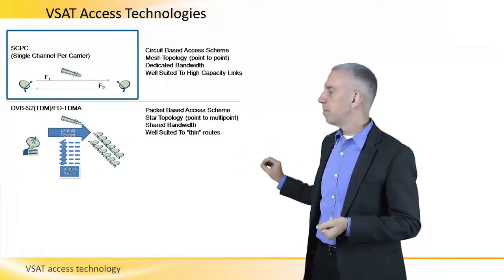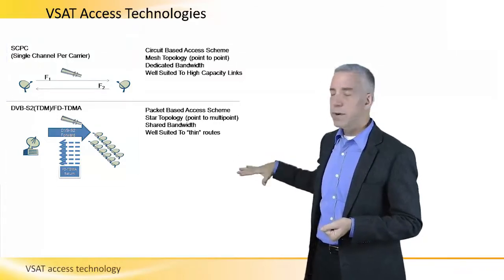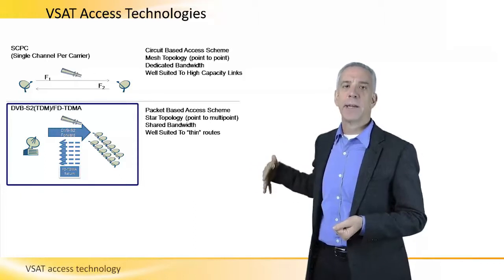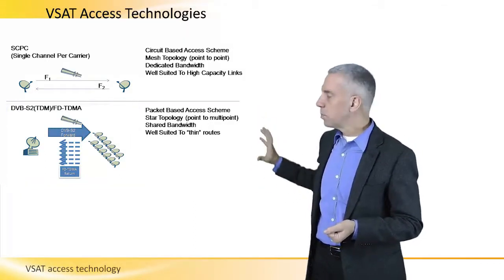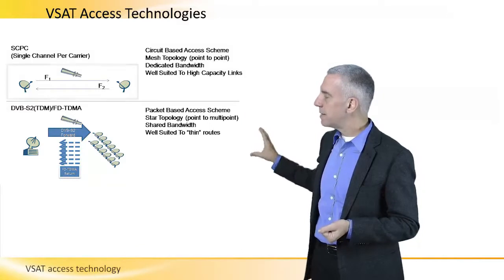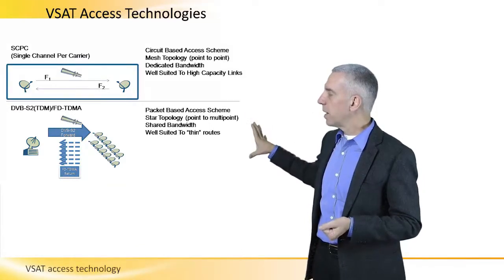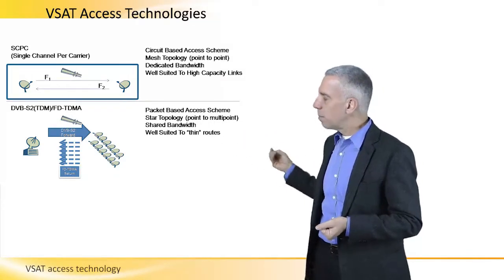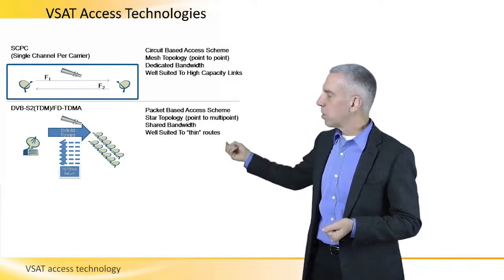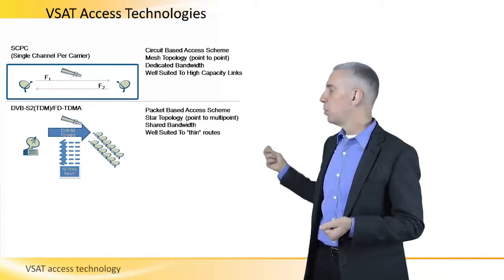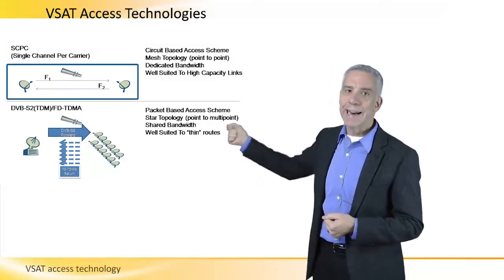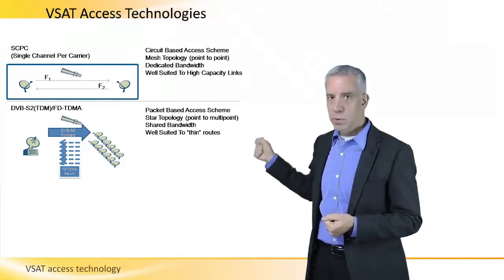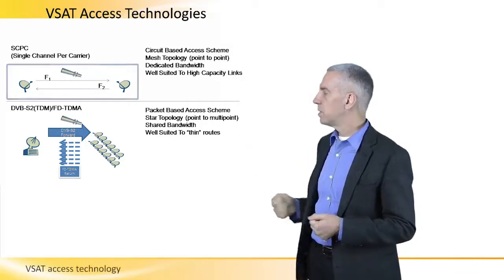One is SCPC, Single Channel Per Carrier. The other is DVB-S2/TDMA. The difference between the two is that SCPC is actually a circuit-based access scheme. We're really setting up a point-to-point circuit from one station to another station, and in so doing, we're dedicating capacity — the satellite bandwidth — to that link between those stations.